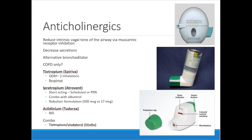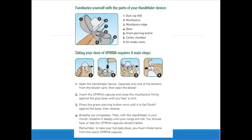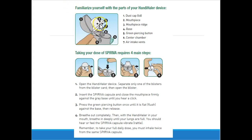Spiriva is by far the most common anticholinergic, and we're starting to see others like aclidinium (Tudorza) come to market. Spiriva has a unique mechanism — you place a capsule into the device, lock the mouthpiece into place, then use a piercing button to push a sharp spike through the capsule opening its contents. You then suck in through the mouthpiece; since it's a dry powder inhaler you breathe deep and fast, doing it twice to get everything out.